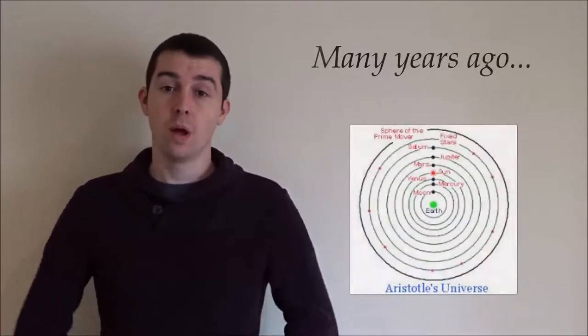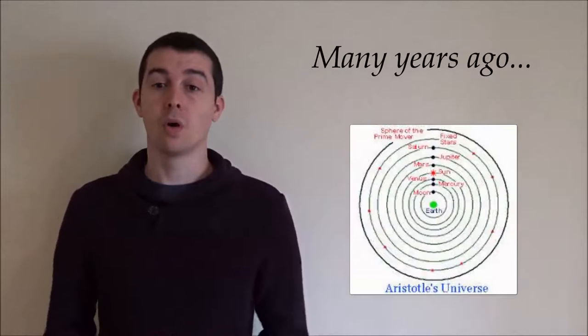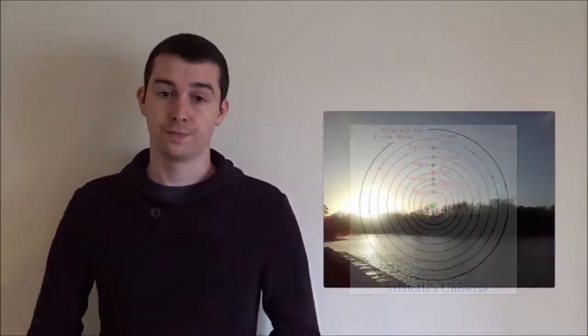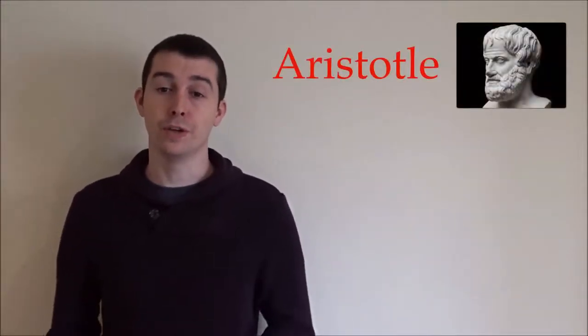Many years ago people thought that the sun orbits in a circle around the earth. Every morning the sun rose in the east and set in the west. Therefore people believed it was moving around the earth.